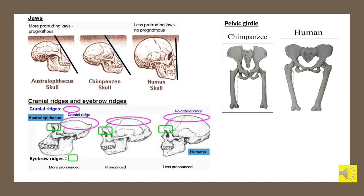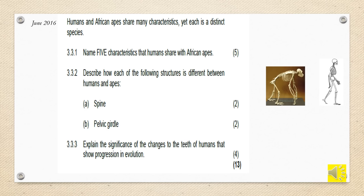The human pelvic girdle has become larger, shorter and wider to support the greater weight due to upright posture; ape pelvic girdles are long and narrow. Humans and African apes share many characteristics yet each is a distinct species. Similarities include: opposable thumbs; long upper arms; freely rotating arms; eyes to the front for stereoscopic vision; flat nails instead of claws; enlarged brain parts processing information from hands and eyes; a larger brain; and eyes with cones for colour vision.